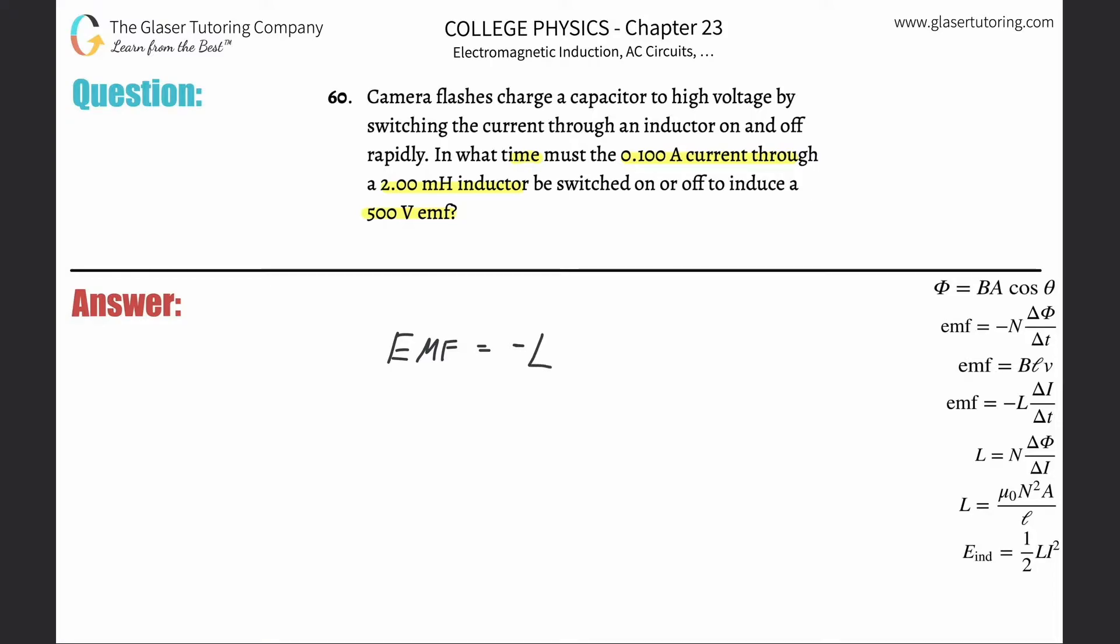negative - we can ignore the negative sign, it's just a thing of Lenz's law, I'm going to just get rid of it. So this is negative L, that stands for the inductance, multiplied by the change in the current flowing through the coil divided by the change in the time. All right, so if we need to now solve this for time, we're just going to do a little algebra here.